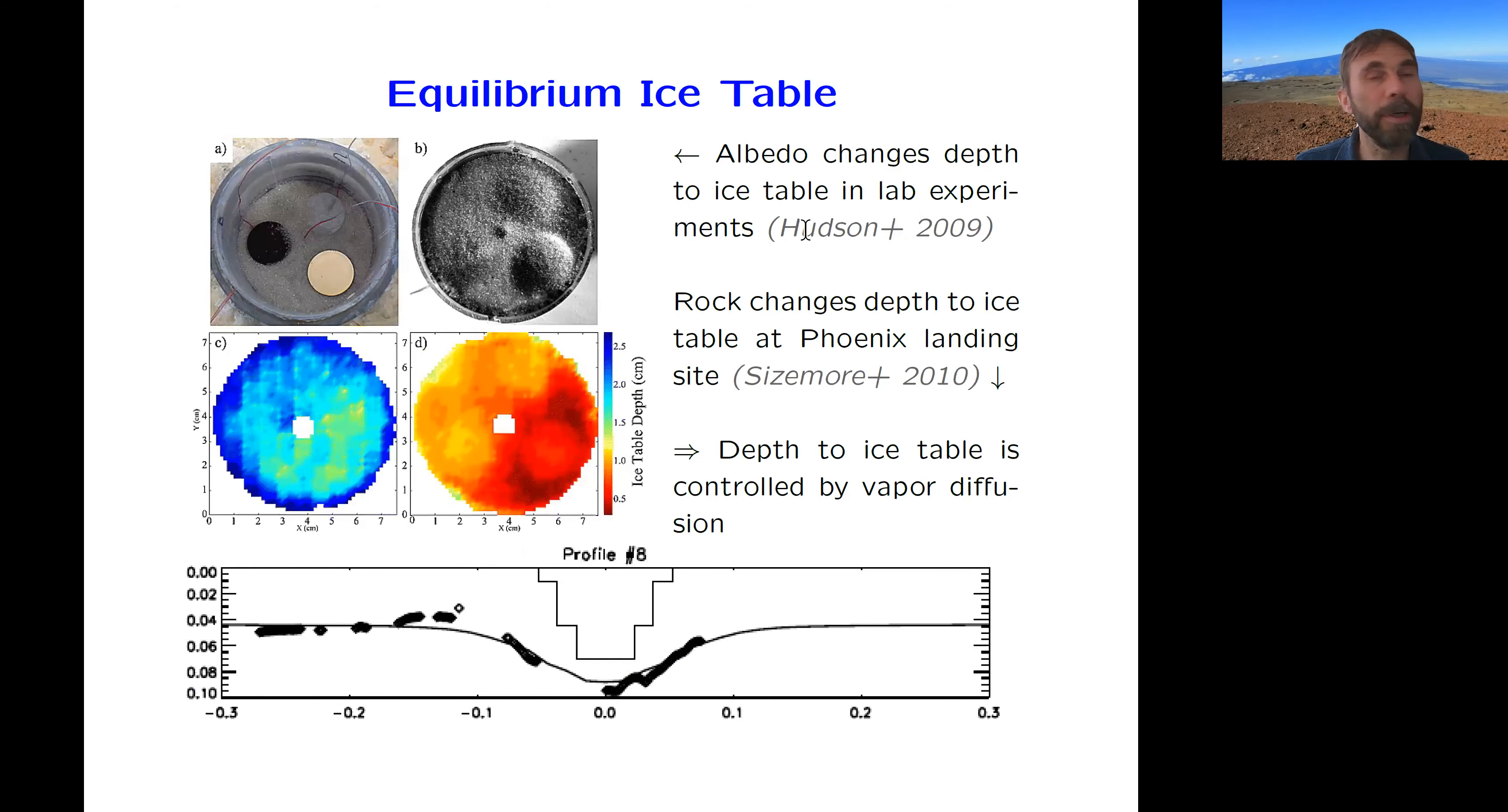All right. So the equilibrium ice table has been confirmed or studied in many ways. So here's a lab experiment where a temperature gradient drives vapor into the ground and there will be ice forming by desublimation directly in the soil. And then a highly reflective disc on the surface and highly absorbing disc on the surface. So that will make it warmer, the other one will make it cooler, and there was a headspace of a given humidity. And a plot on the lower left here shows the depth of the ice table was measured after this experiment went on for a while. And where it's colder, the ice table is closer to the surface, where it's warmer, the ice table is deeper.